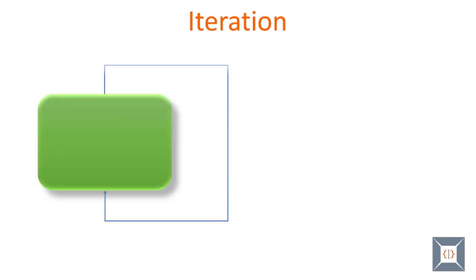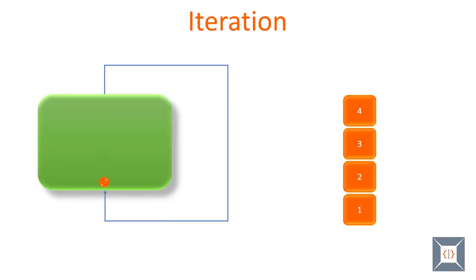The next terminology is iteration. Iteration is doing something repeatedly. So enumeration is a special type of iteration.